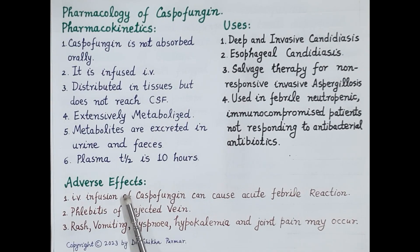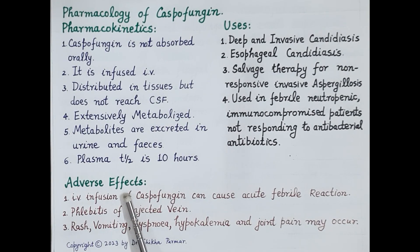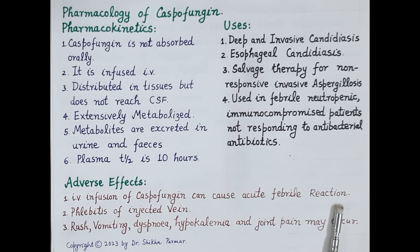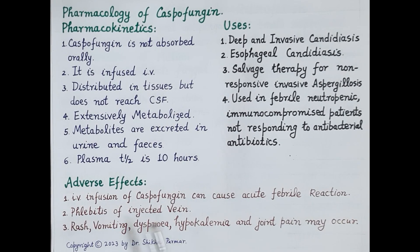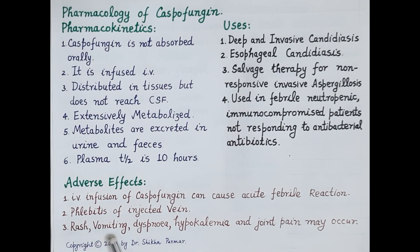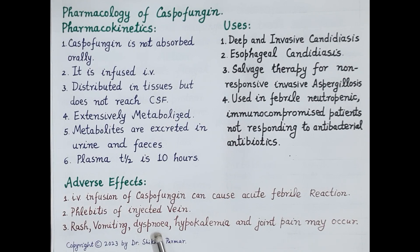Caspofungin has a relatively low incidence of adverse effects because its target — the fungal cell wall — is absent in human cells. IV infusion can cause an acute febrile reaction characterized by fever, shivering, rashes, and diarrhea. It can also cause phlebitis, which is inflammation at the injection site. Additional adverse effects include vomiting, dyspnea (difficulty breathing), hypokalemia, and joint pain.